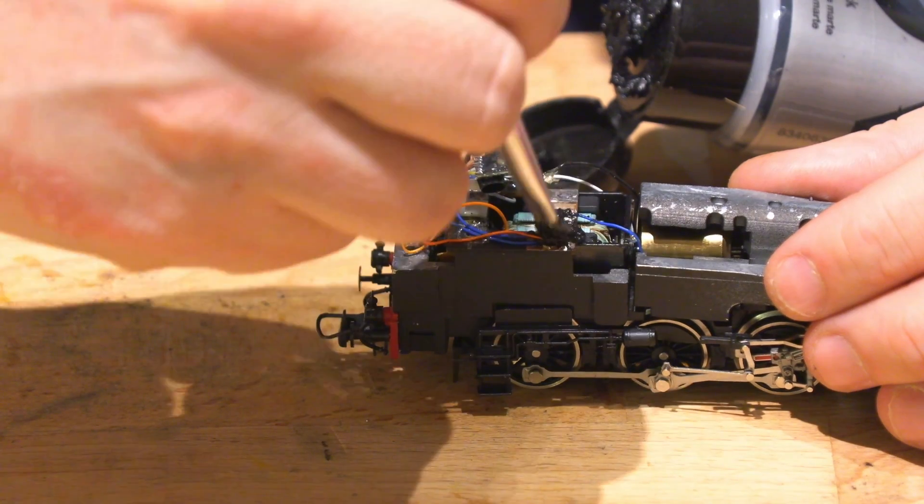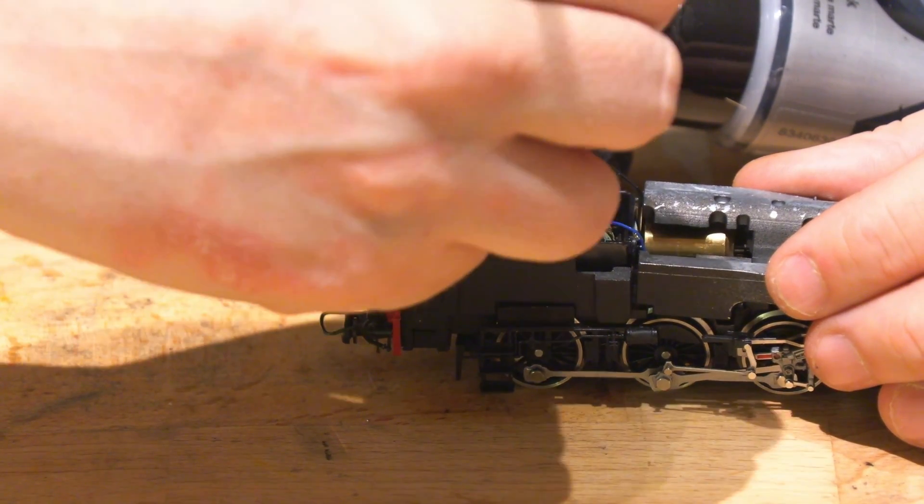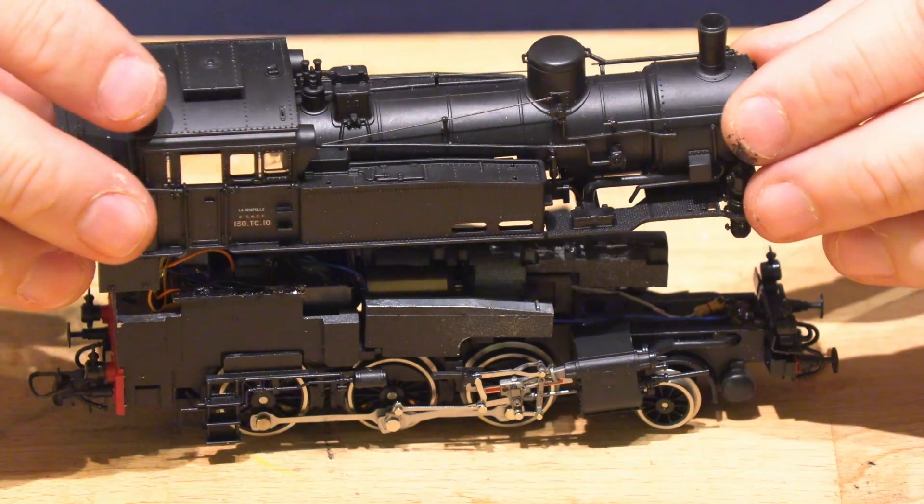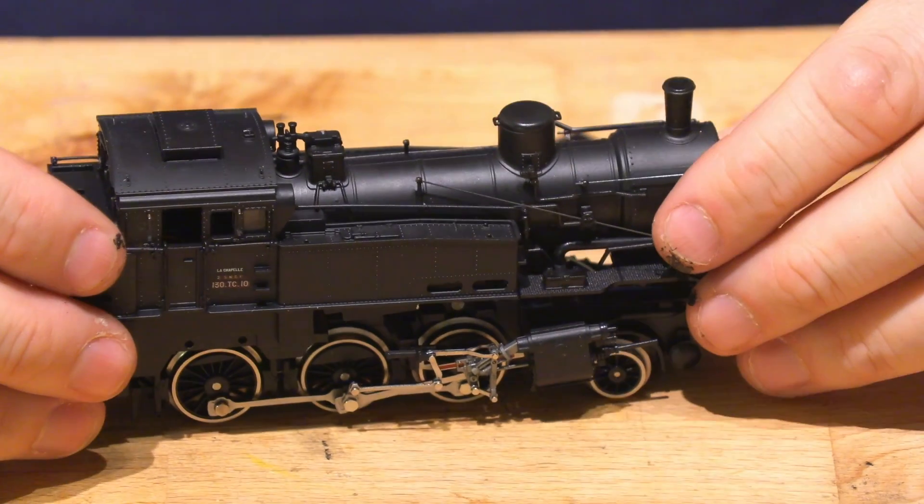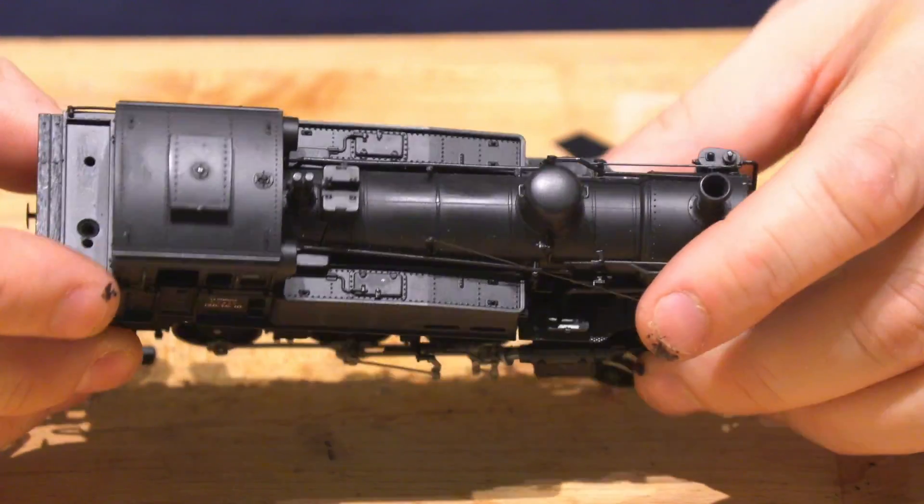As a final step, we put black paint where we have solder to hide it. Then we put the case back on, taking care not to pinch any wires. This happened to me and I had to redo the front LED.